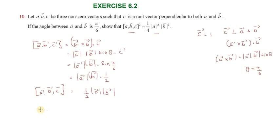So if we square it, the scalar triple product A vector, B vector, C vector, the whole square, equals magnitude of A vector squared into magnitude of B vector squared. So we get the proof. Thanks friends.